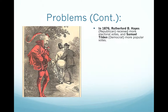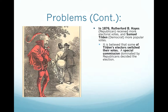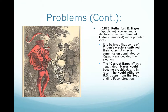In 1876, Rutherford B. Hayes, a Republican, received more electoral votes than Samuel Tilden, a Democrat who got the popular vote. It is believed that some of Tilden's electors switched their votes. The Special Commission, dominated by Republicans, decided the election. The corrupt bargain was negotiated between the two parties — Hayes would become President, and in return he would withdraw U.S. troops from the South, ending Reconstruction.